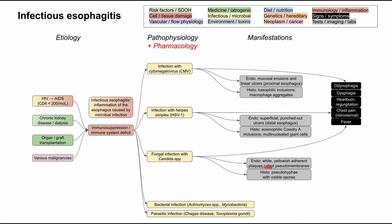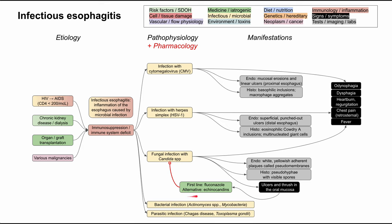This white-yellowish adherent plaque called pseudomembranes is also present in other Candida infections throughout the body. In fact, Candida infection is so characteristic that you can sometimes see it on physical exam — you might see ulcers and thrush in the oral mucosa without having to scope the patient. If you have an immunosuppressed patient, say with AIDS and a CD4 count of 150, with oral thrush and complaints of difficulty and pain with swallowing, that's enough for a clinical diagnosis and you can treat them with antifungals.